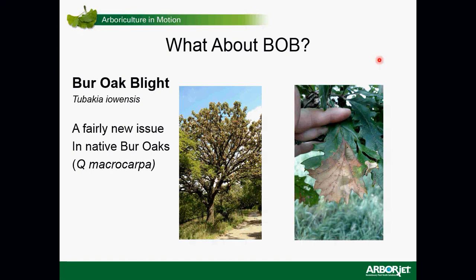It's a big problem in Iowa, so that's kind of where they identified it was a new fungus, and thus the new name. The tree on the left is a good indicator of what a bur oak blight tree might look like in late summer. The picture on the right is a close-up of the leaf — a very common necrotic or dead area in the leaf that you might see mid-summer.